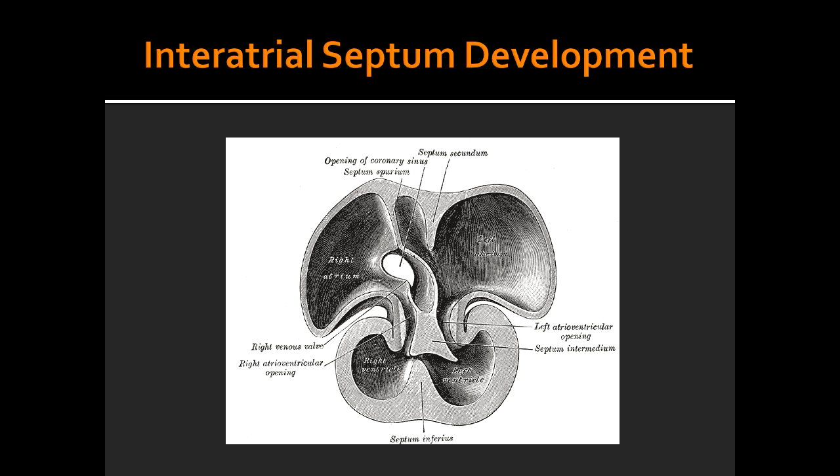What is happening on picture 2 of the interatrial septum development? In the second image, you see perforations in the septum primum, and this will form the foramen secundum. At this stage, foramen primum disappears.